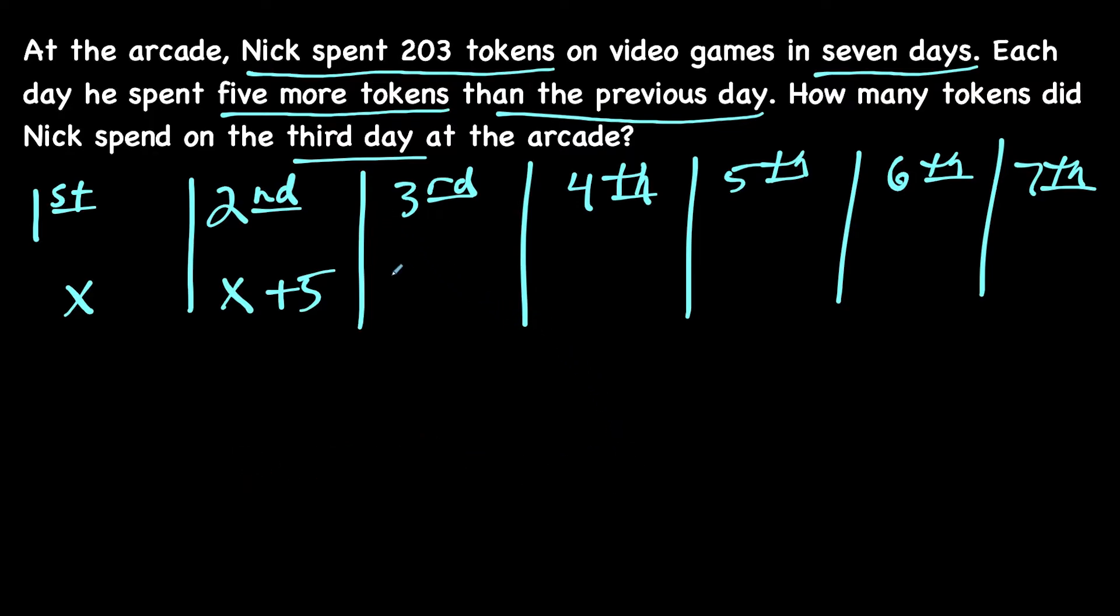So x plus 10 would go next. If we add five again, we would have x plus 15, because 10 plus five is 15. Then we'd have x plus 20, x plus 25, and then on the last day, the seventh day, Nick uses x plus 30 tokens.